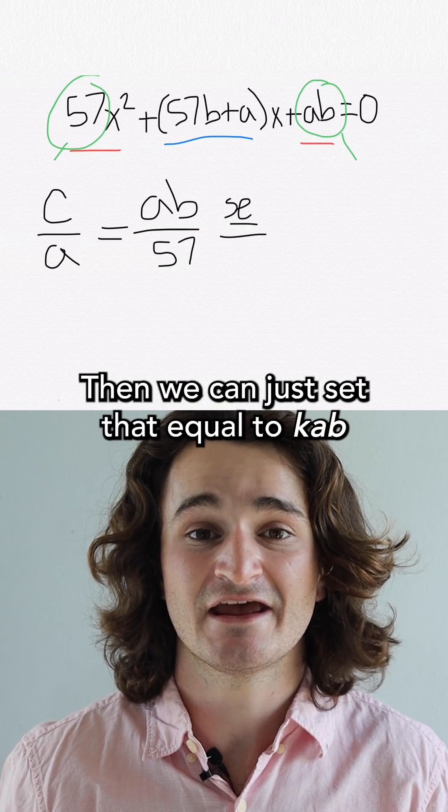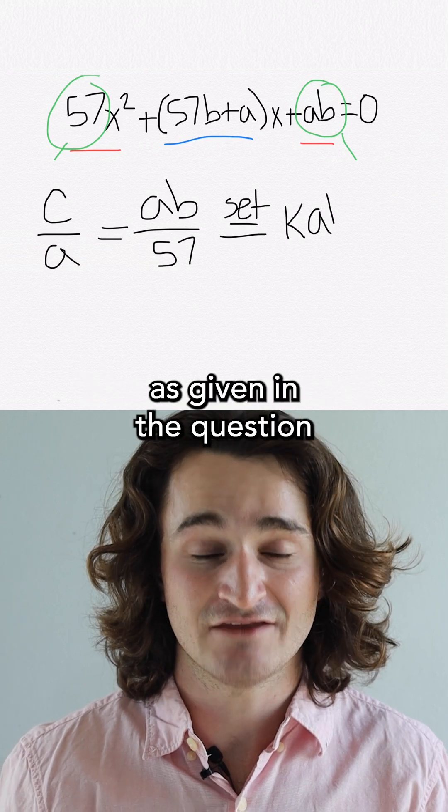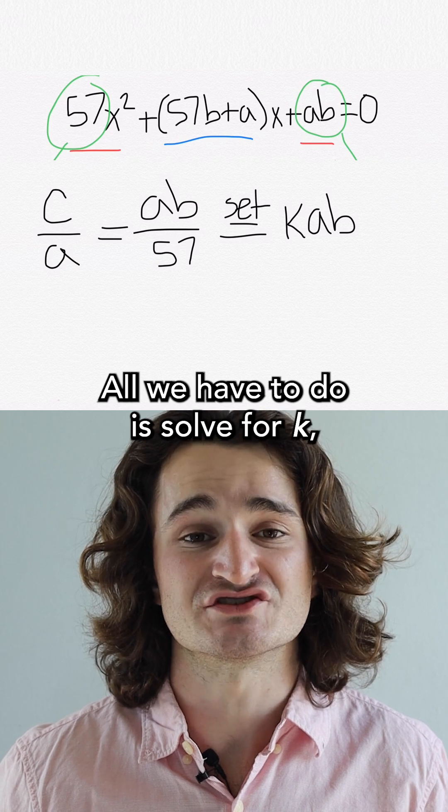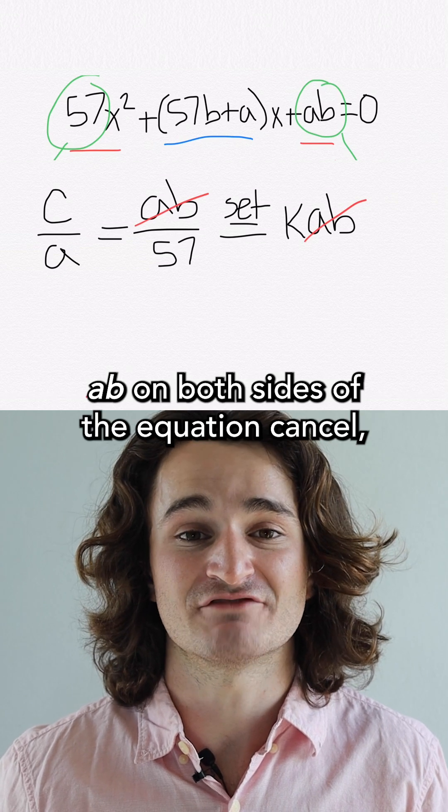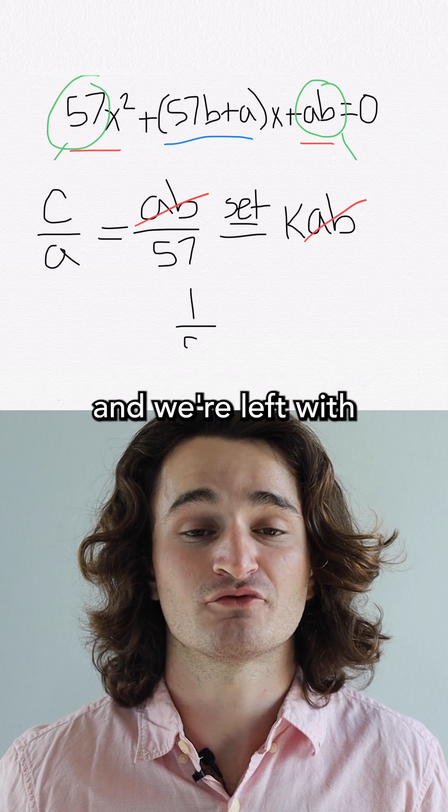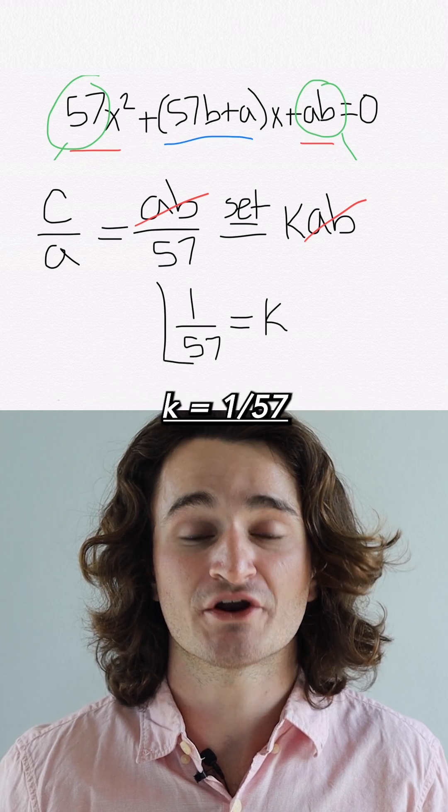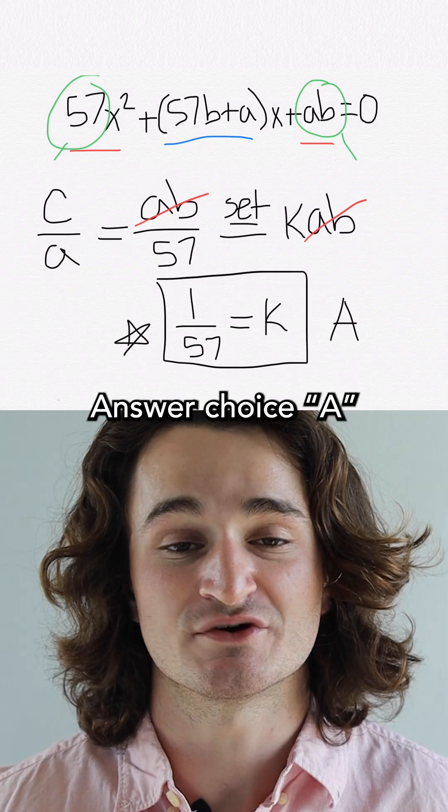Then we can just set that equal to kab as given in the question. All we have to do is solve for k and luckily the terms ab on both sides of the equation cancel and we're left with k is equal to 1 over 57. Answer choice A.